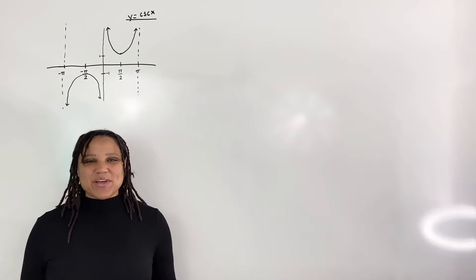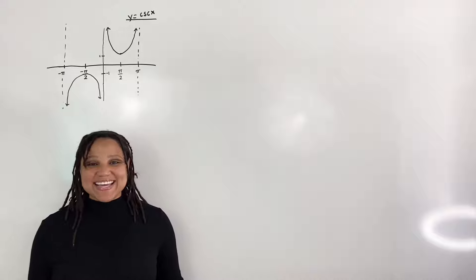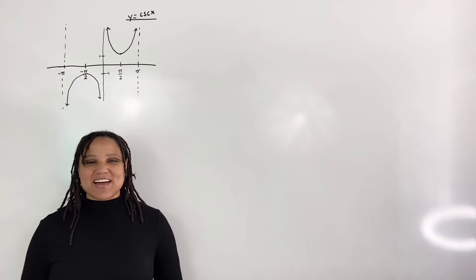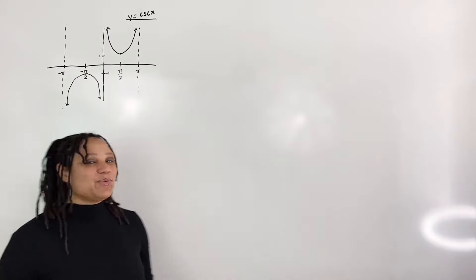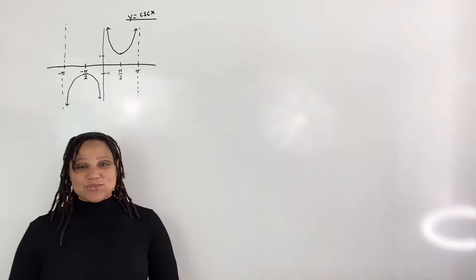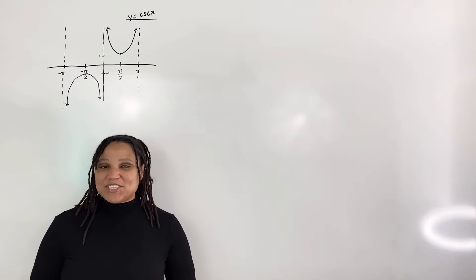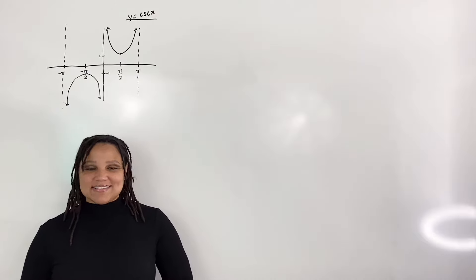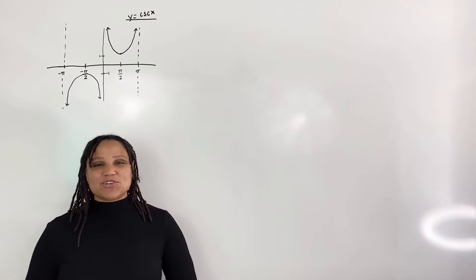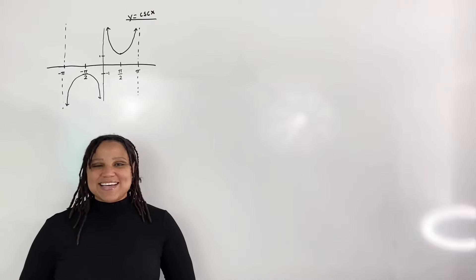In this video, we are going to graph inverse cosecant and identify the domain and range. We begin with the original graph of cosecant. Cosecant is a function because it passes the vertical line test. That means if I draw any vertical line to the graph, it will only intersect the graph one time.